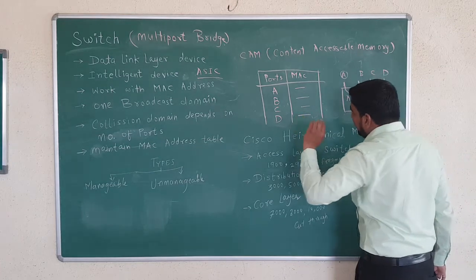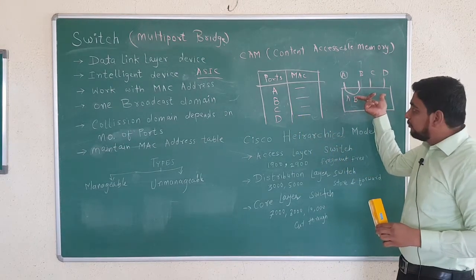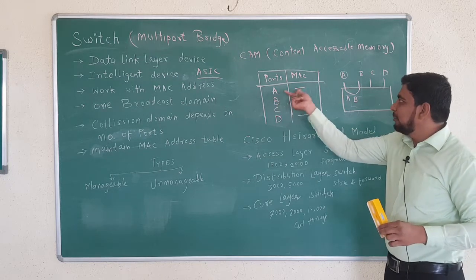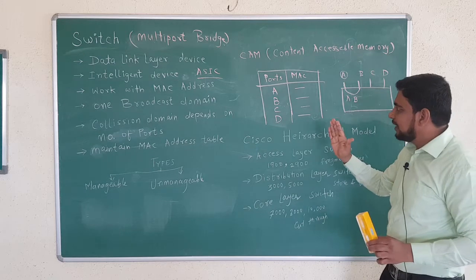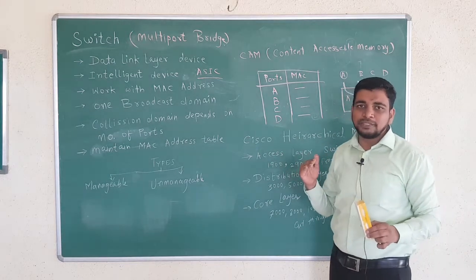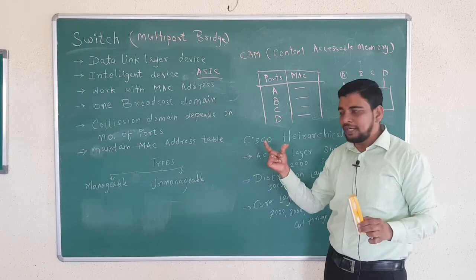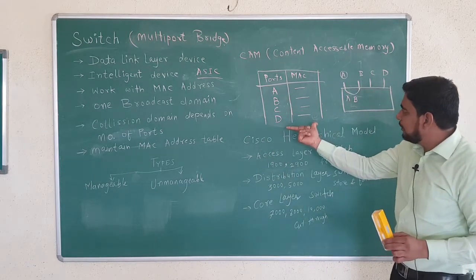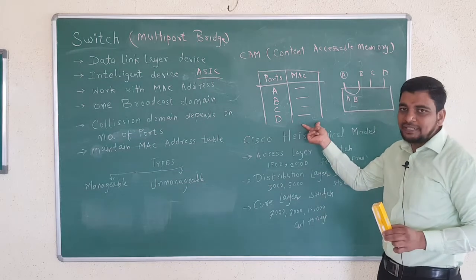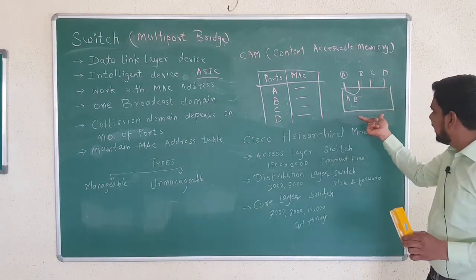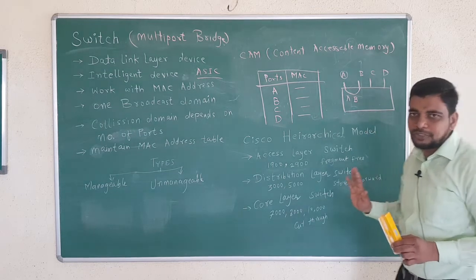The switch will maintain the MAC addresses in the CAM table. The first time, it will broadcast because it does not know the MAC addresses. After broadcasting and receiving replies, it understands which MAC address is coming from which port, and updates the CAM table.